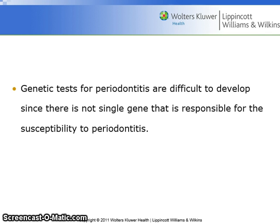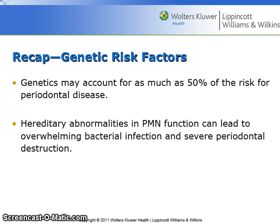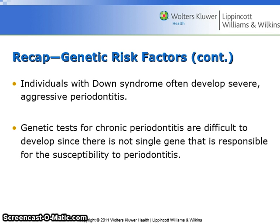Genetic tests for periodontitis are difficult to develop since there is not one single gene responsible for susceptibility to periodontitis. Currently available tests in the United States detect gene variations in interleukin genes. There appears to be increased risk of developing severe periodontitis when two variations of the IL1 gene are found together, and this relationship has only been demonstrated in non-smokers. Genetics may account for as much as 50% of the risk for periodontal disease, and hereditary abnormalities in PMN function can lead to overwhelming bacterial infection and severe periodontal destruction.